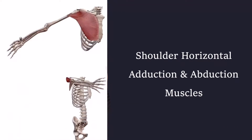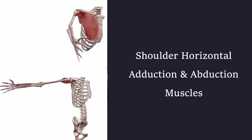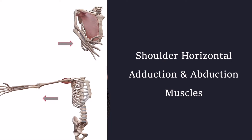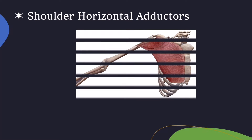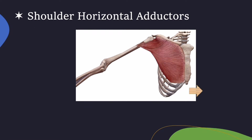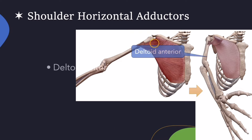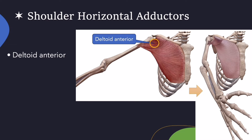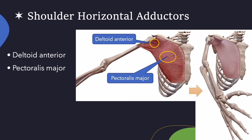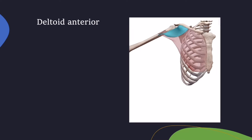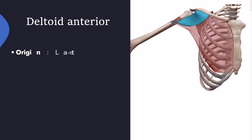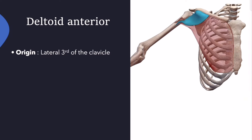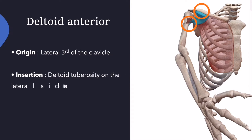Shoulder horizontal adduction and abduction muscles. The main muscles for shoulder horizontal adduction are deltoid anterior and pectoralis major. Deltoid anterior muscles start from the lateral third of the clavicle and end at the deltoid tuberosity on the lateral side of the body of the humerus.